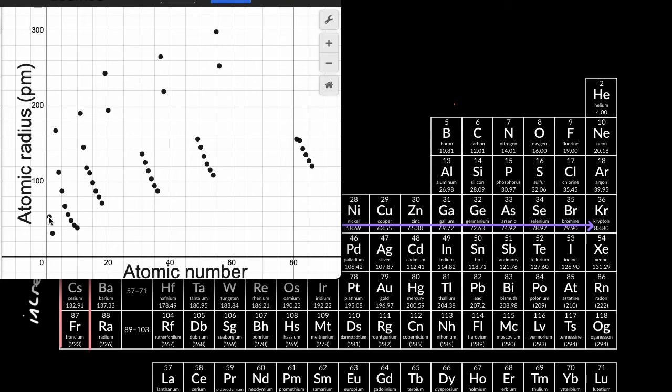So for example, this right over here is hydrogen, and then your atomic number increases, you're at helium, and our intuition is correct. It looks like the radius has decreased.